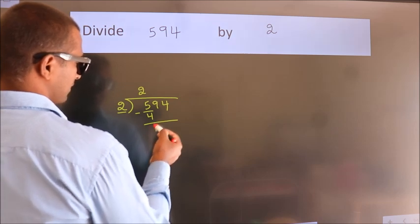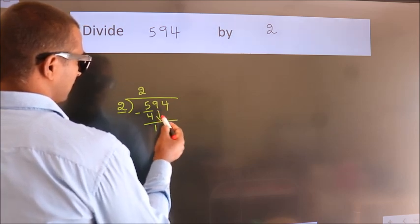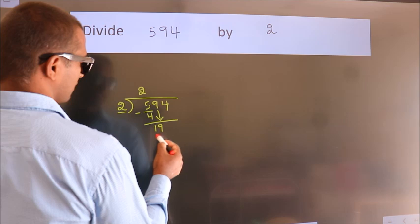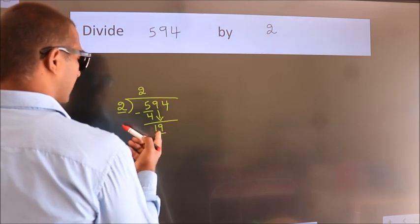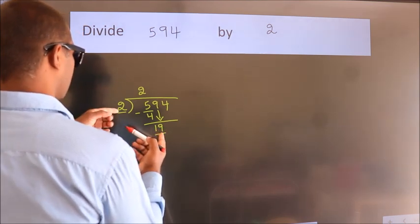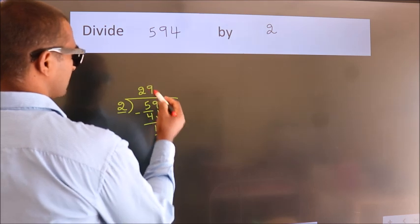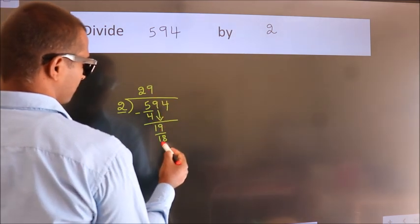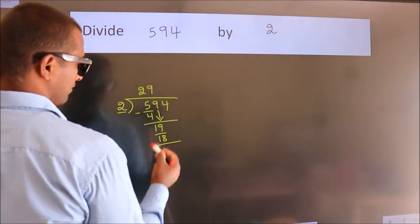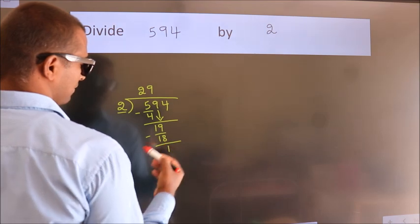After this, bring down the beside number. So 9 down, so 19. A number close to 19 in 2 table is 2 times 9, which is 18. Now we subtract. We get 1.